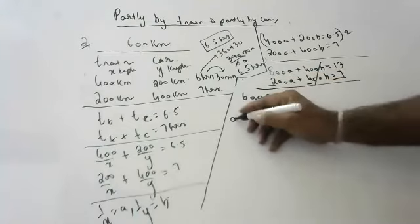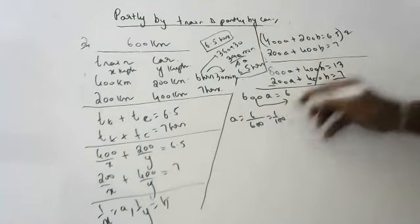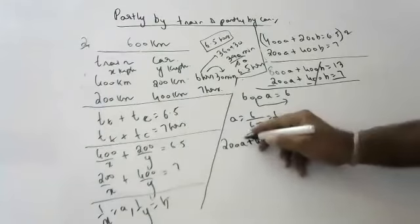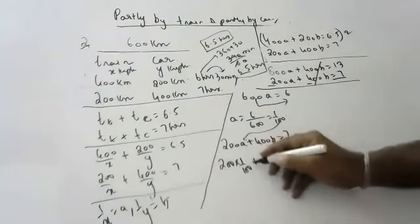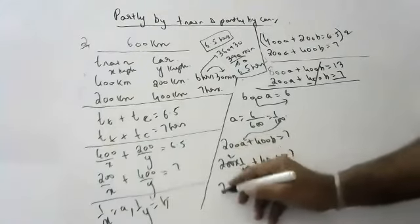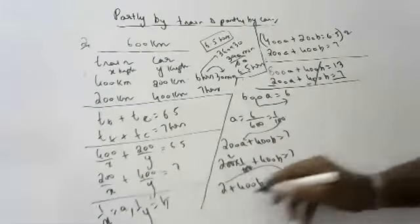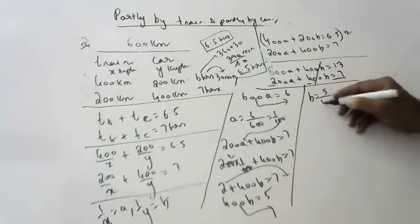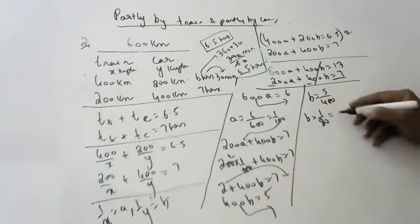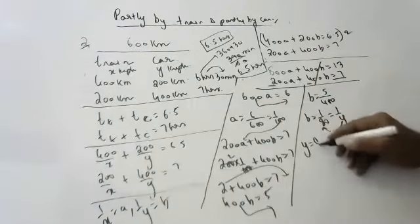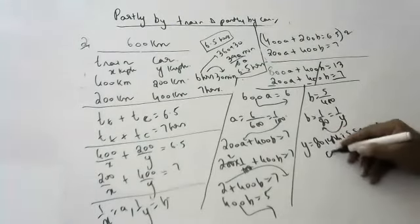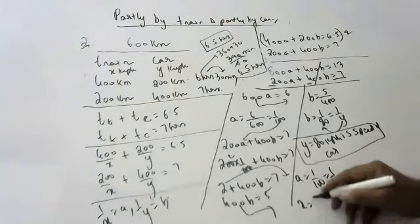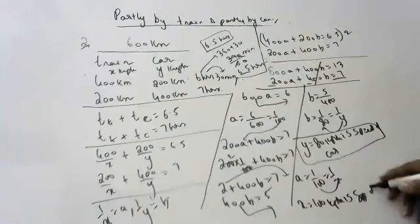Substituting A equals 1/100 into the second equation: 200 × (1/100) plus 400B equals 7, giving 2 plus 400B equals 7, so 400B equals 5, and B equals 5/400 equals 1/80. Therefore x equals 100 kmph is the speed of the train, and y equals 80 kmph is the speed of the car.